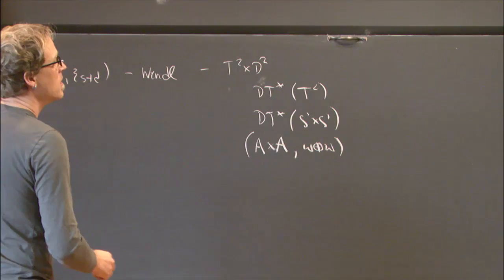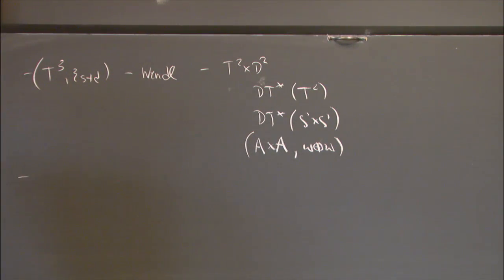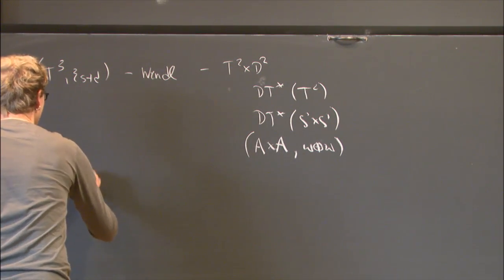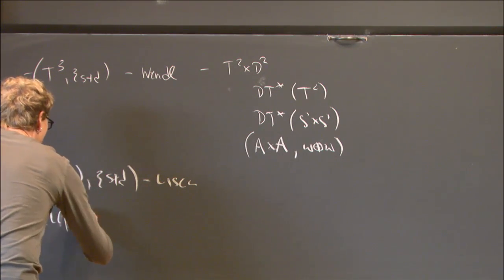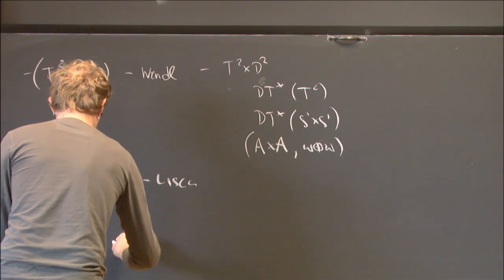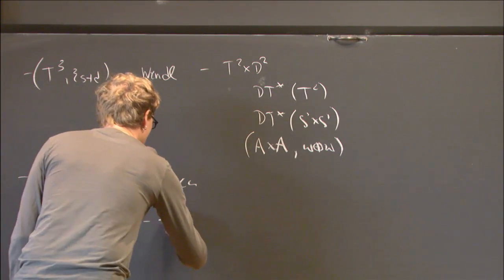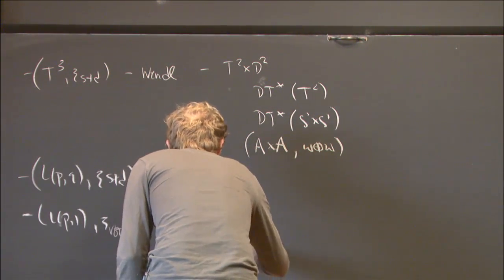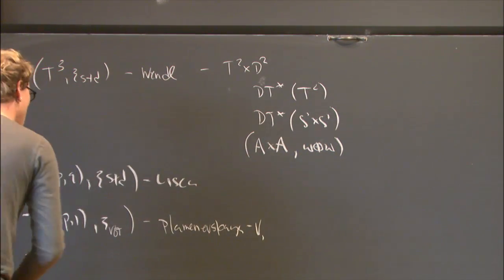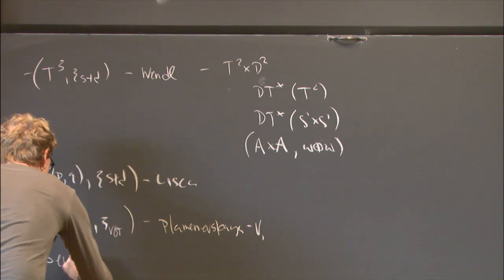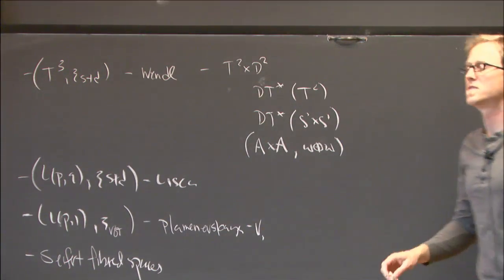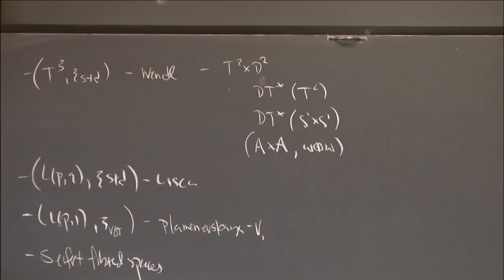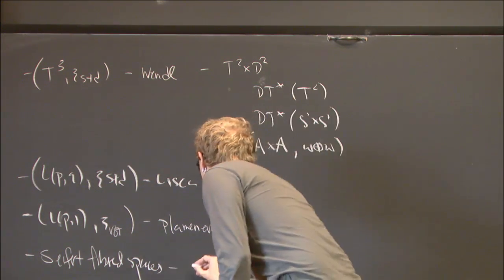You can generalize this using versions of Wendl's results or McDuff to lens spaces L(p,q) with the standard contact structure—this is Lisca. You can do L(p,1) with any contact structure—this is Olga Plamenevskaya and myself. You can also classify minimal weak symplectic fillings of some Seifert fibered spaces; for the most part the classification is unique, and Lisca's work gives a finite list. Also Laura Starkston.